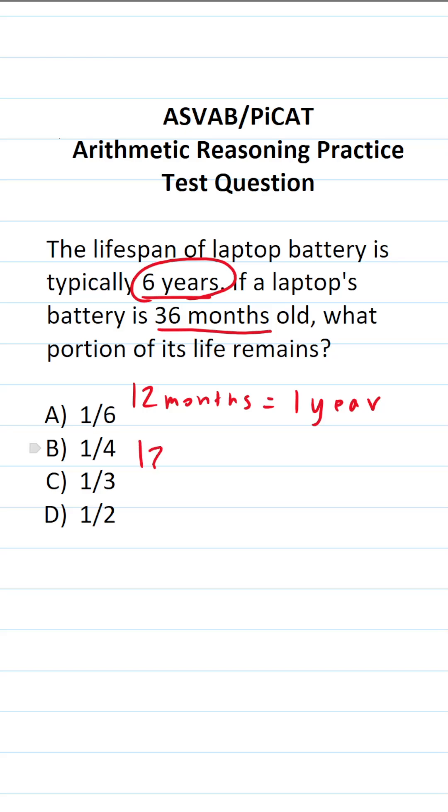And to do that, I'm going to do 12 times six. Two times six is 12, carry one. One times six is six, plus one is seven. So six years is the same thing as 72 months.